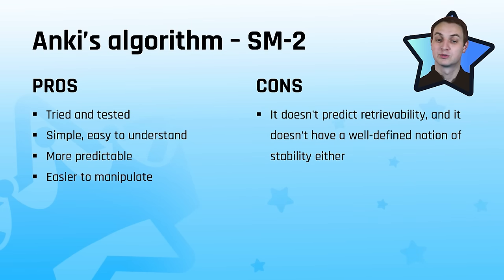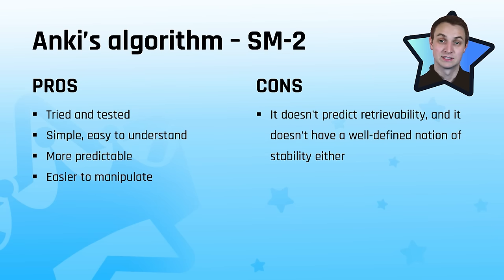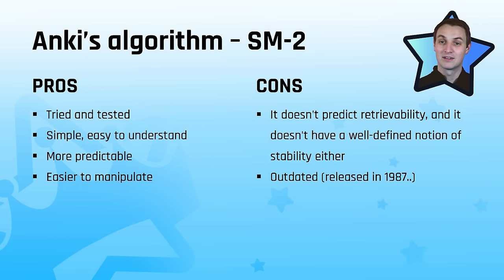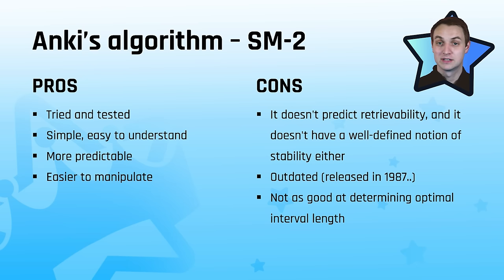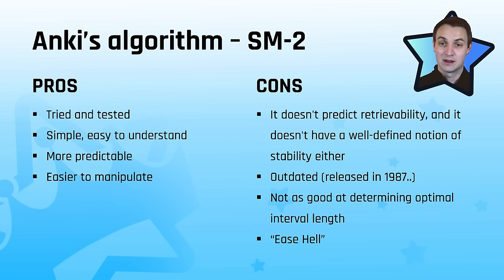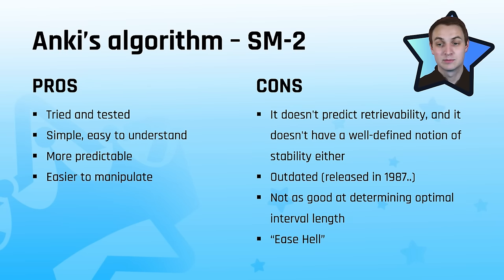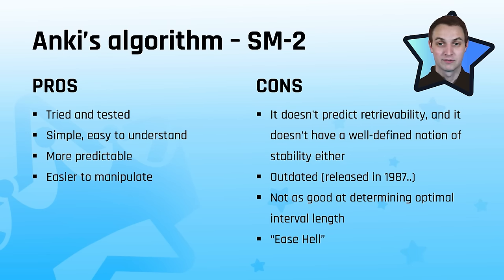The cons: it doesn't really attempt to predict retrievability and doesn't have a well-defined notion of stability. You can look at your retention after the fact and modify the interval modifier to target a certain retention, but it's not really predicting retrievability. It's also outdated — SuperMemo 18 has already been released with a lot of new data and better approaches. There's also ease hell: the again and hard buttons both decrease ease, while only easy increases it. If you hit again or hard a lot initially on a difficult card, it's hard to raise that ease, and people fall into reviewing cards far more frequently than needed.